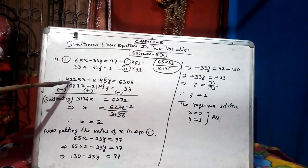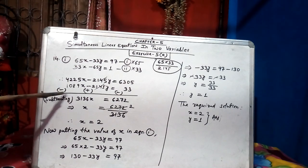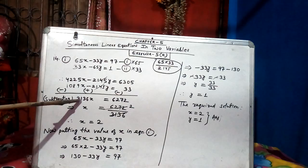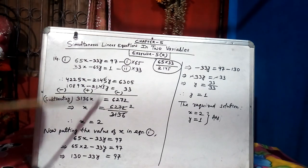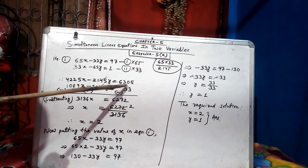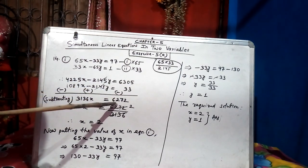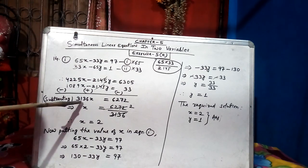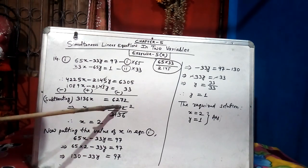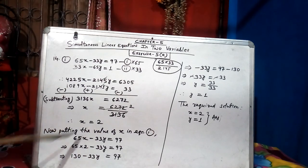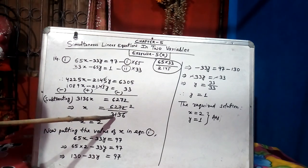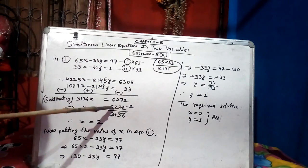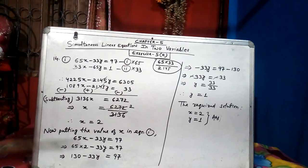Now, 4,225x minus 1,089x, then answer is 3,136x. This got cancelled. 6,305 minus 33 is 6,272. And here x equal to, this will go and divide and this both of them divide and is equal to 2. Therefore, x equal to 2. That means, 3,136 twos are 6,272. So x equal to 2.